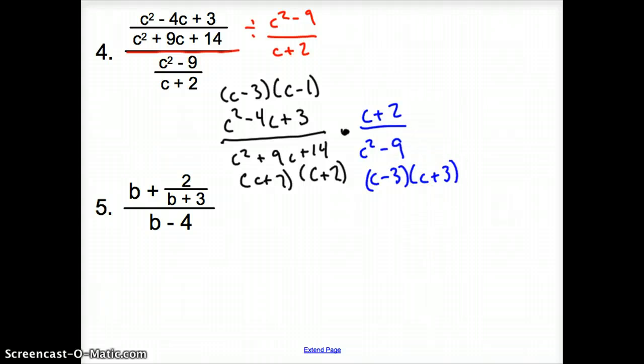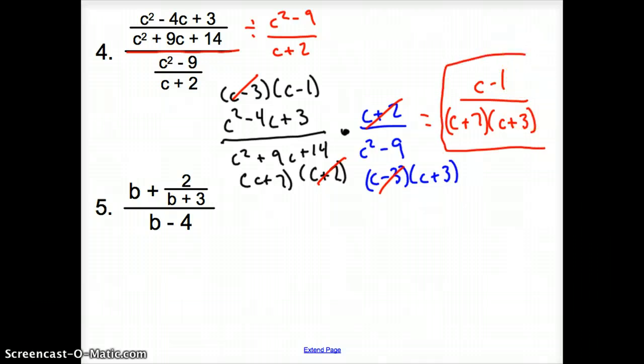So now what can we cancel out, kitty corner? Well, we can cancel out this c minus 3 with that c minus 3. How about c plus 1? Nothing. How about this c plus 2 and that c plus 2? What's left on top? Just that guy. So it's going to be c minus 1 over c plus 7 times c plus 3. And this is our simplified rational expression.